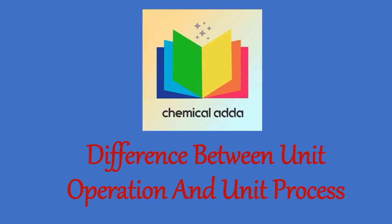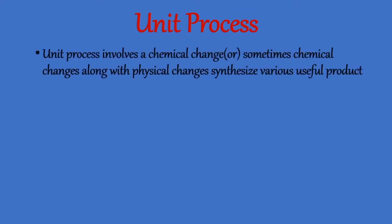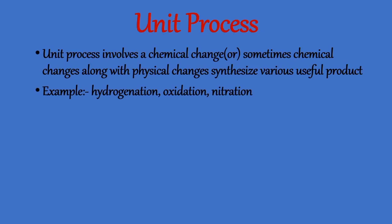Any chemical process is a combination of unit operation and unit process. Unit process involves a chemical change, or sometimes chemical changes along with physical changes, to synthesize various useful products. Examples include hydrogenation, oxidation, and nitration.